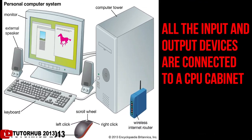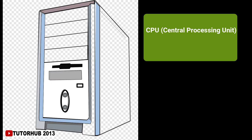All the input and output devices are connected to the CPU cabinet as shown in the figure. Let's discuss the third component — the Central Processing Unit. The CPU is neither an input nor an output device; it controls all the input and output devices connected to it. The CPU takes the information given by the input devices, processes it, and sends the result to the output device.